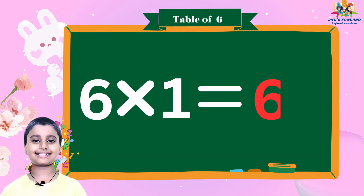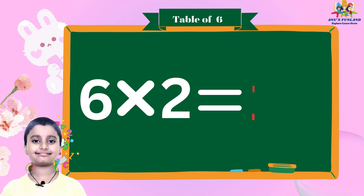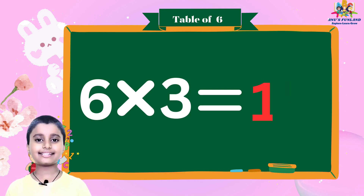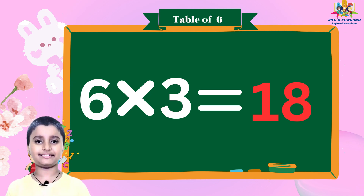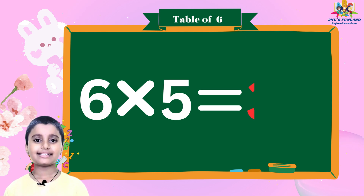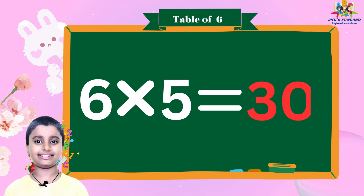Six ones are six. Six twos are twelve. Six threes are eighteen. Six fours are twenty-four. Six fives are thirty.